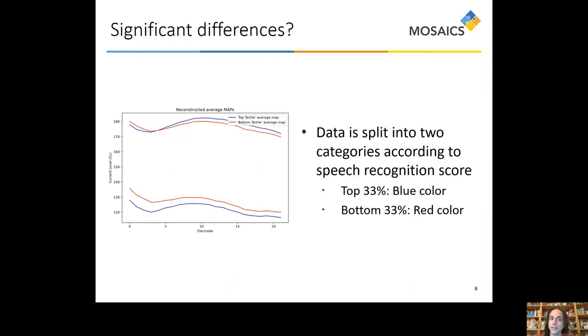But are there significant differences between the populations of the ones who perform better and the ones who perform more poorly in specifically the speech recognition in quiet test? I have split the data into two categories according to their scores. The top 33%, which are the ones that were performing worse than 76%. And here on the left, you can see the average maps for the top third tile in blue and the bottom one in red. You can see how there are some visible differences, which I'm going to explain more in detail right now.